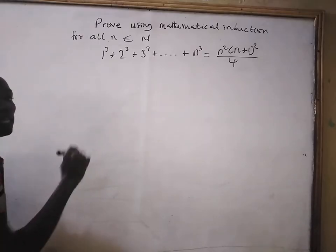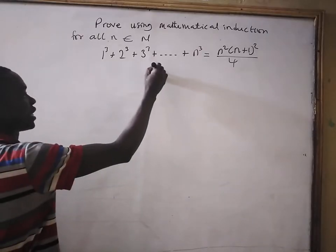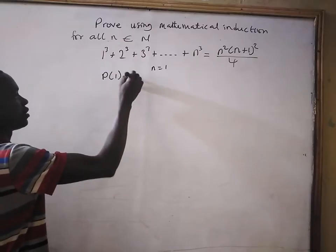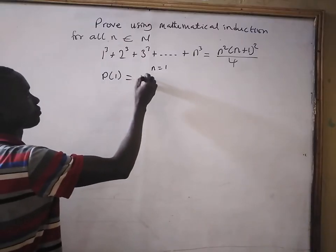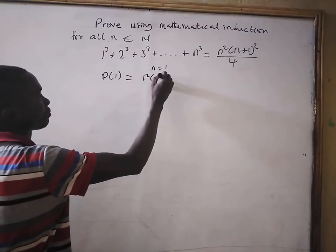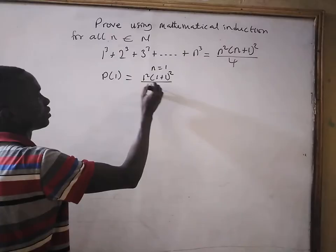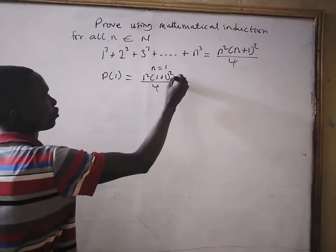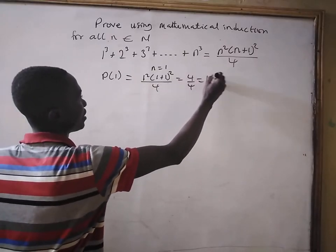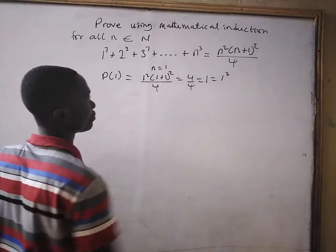Now we will start with the base case, where we take n equals 1. That is, 1³ equals 1 squared times bracket 1 plus 1 all squared divided by 4, which is equal to 4 divided by 4, equals 1, and that is equal to 1³.